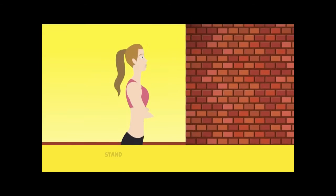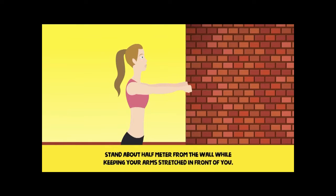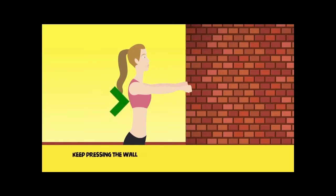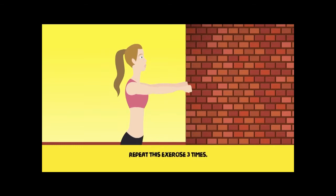Exercise 5. Stay at about half a meter from the wall while keeping your arms stretched in front of you. Start pressing the wall against your fist. Keep pressing the wall for 20 seconds and then rest for 10 seconds. Repeat this exercise three times.